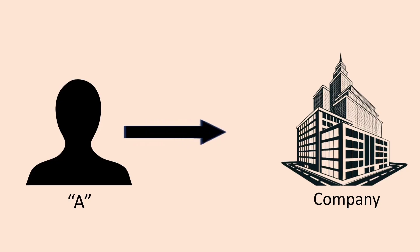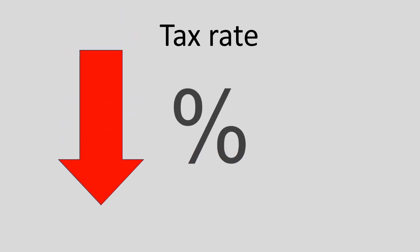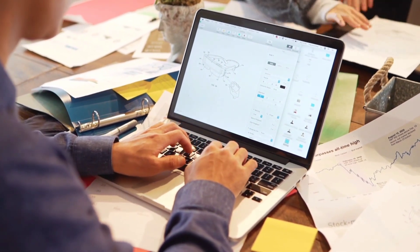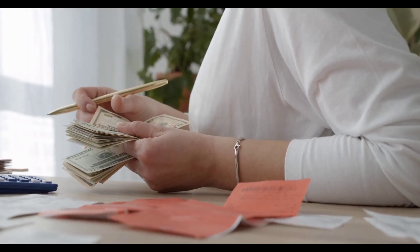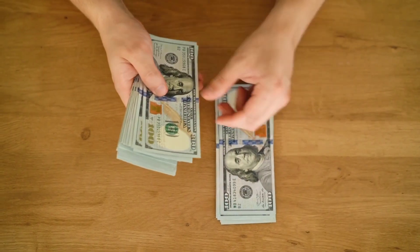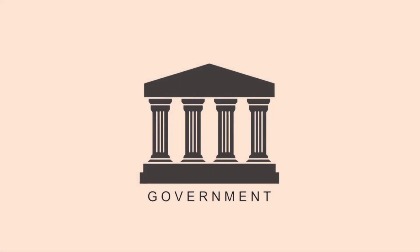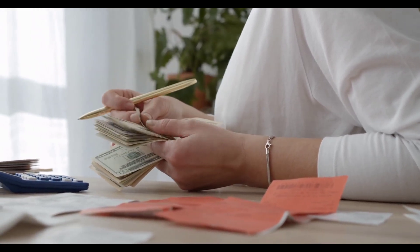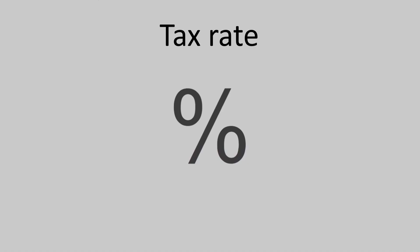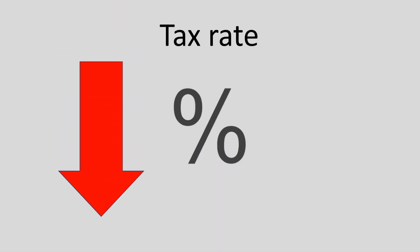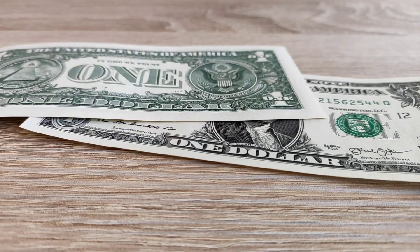This can be simply explained through an example. Imagine that you work for a company and they pay you a salary. When the tax rates are low, you do not find it worthless to work. In fact, you are perhaps encouraged to earn even more money, save and invest. Similarly, the government also benefits from this. As more people continue to earn, the taxes they contribute to the revenue also keeps increasing. Therefore, despite the lower tax rate, the government is still able to earn revenue.